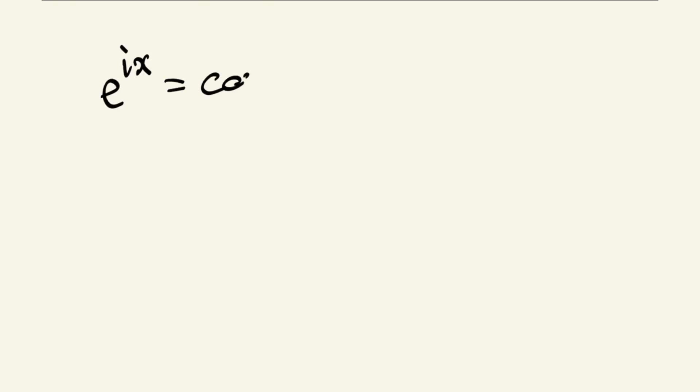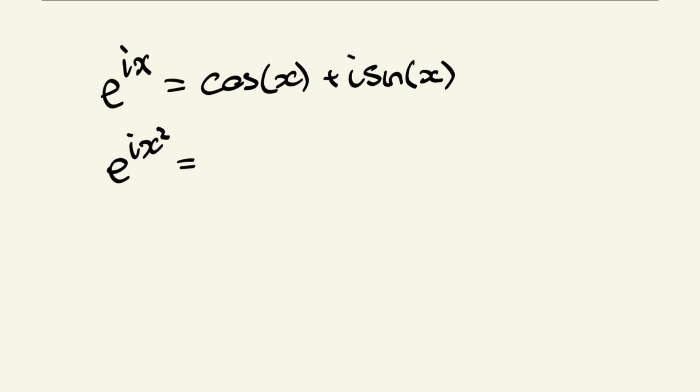The first thing I want us to do is consider Euler's formula. Euler's formula states that e to the i times x is equal to cosine of x plus i sine of x. That x is just a placeholder — we can put whatever number or variable we want in there. So we're going to consider e to the i x squared, which is equal to cosine of x squared plus i sine of x squared.